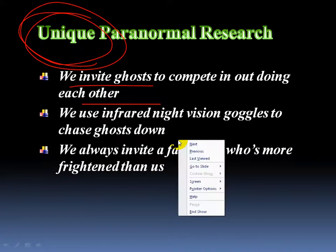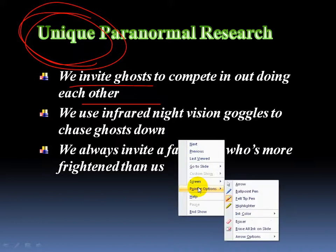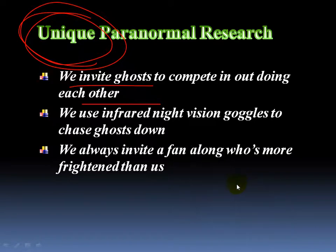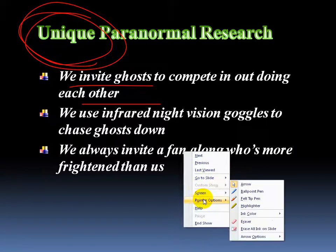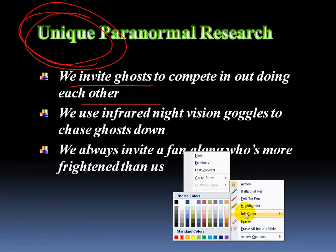I can go ahead and right-click, go down to pointer options, and say I want to go back to my arrow, and then I can click and go to the next slide. If I want to change the color of my felt tip, I can again right-click, come down to pointer options, go down to ink color, and change it to a different color, whatever I want.